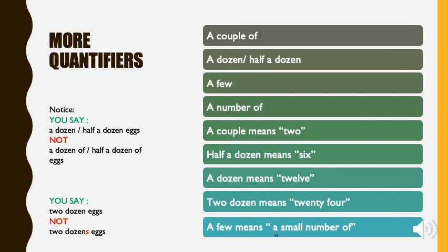Pay attention to this. Notice that you say a dozen or half a dozen eggs. You don't say a dozen of or half a dozen of. We don't add of before the object. And also that you say two dozen eggs, not two dozens eggs. The plural goes to the object, not to the quantifier.